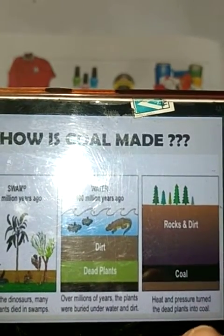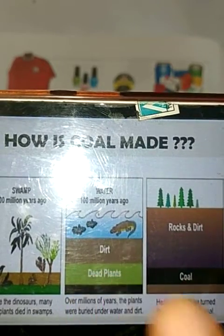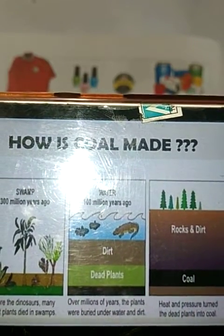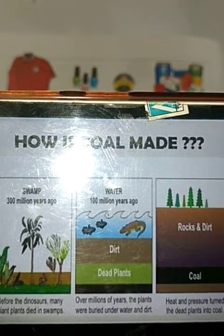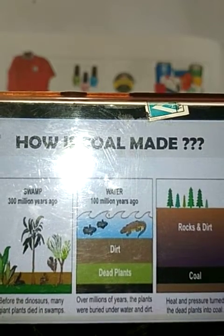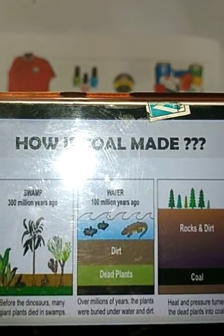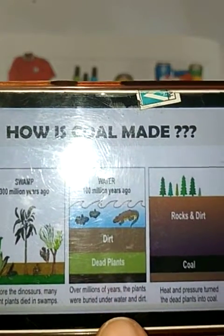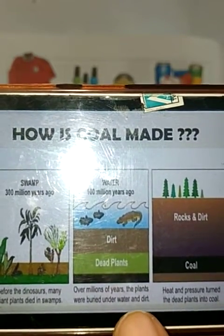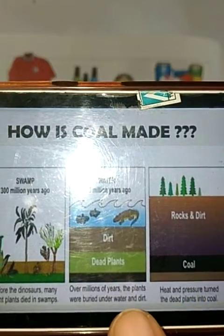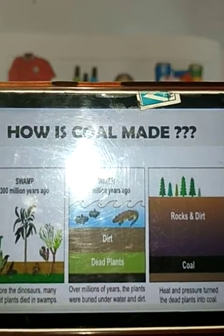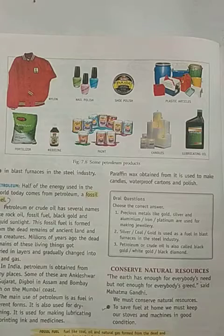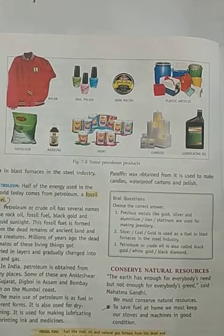These dead plants were buried under dirt and water, and due to heat and pressure they turned into coal. In short, we can say that coal is made from ancient plants — not animals — which are covered by water and dirt, and due to heat and pressure these ancient plants are converted into coal. This is the formation of coal.